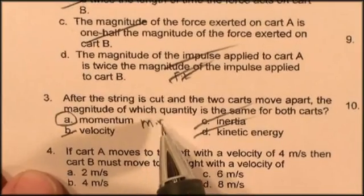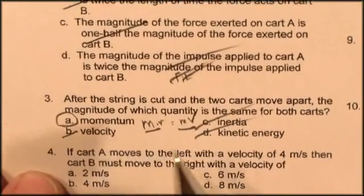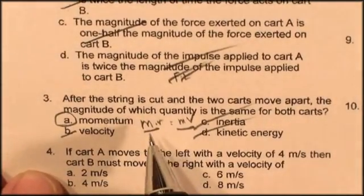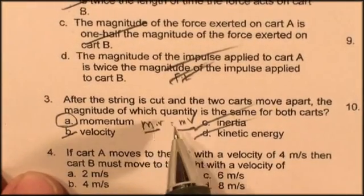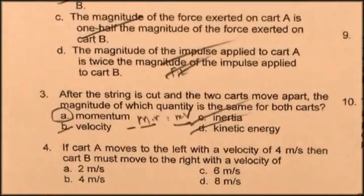But momentum will be the same. Big mass, small change in velocity, little mass, bigger change in velocity, but the momentum is the same before. The momentum before you cut the string was zero, the momentum afterwards is going to be zero, so that has to equal that. Obviously, they're vectors, one goes in the opposite direction, so it's negative.